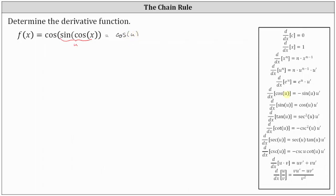The derivative of cosine u with respect to x is equal to negative sine u times u prime. So if we let u equal the inner composite function of sine of cosine x, the next step is to find u prime, or du/dx, where u prime is equal to the derivative of sine of cosine x with respect to x.